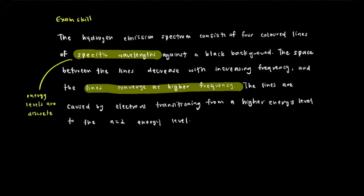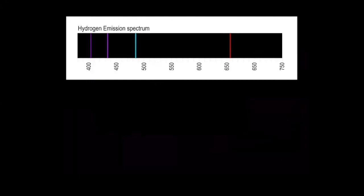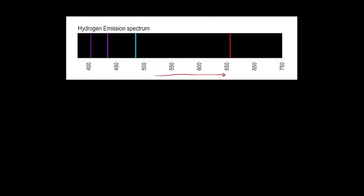To understand the phrase 'the lines converge at higher frequency,' you need a strong understanding of how wavelength, frequency, and energy are interrelated — check out the previous video on the electromagnetic spectrum if you haven't. In the hydrogen emission spectrum, going from left to right the wavelength increases. Since wavelength is inversely related to frequency and energy, frequency and energy increase going from right to left.